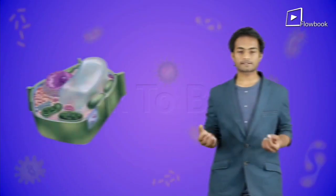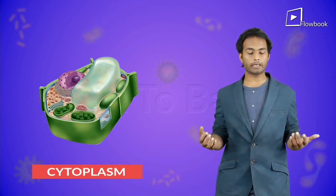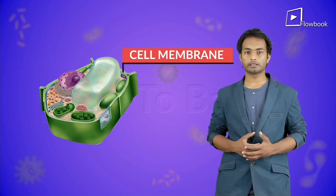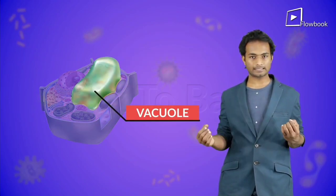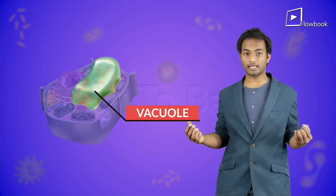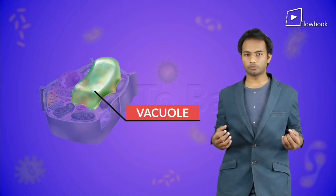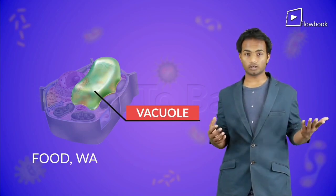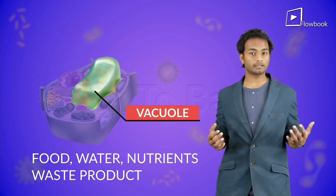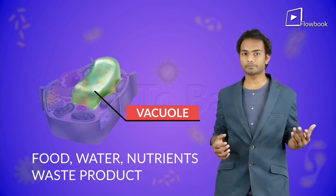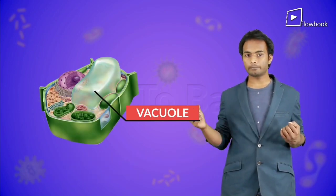We know that cells have cytoplasm, and the cytoplasm is covered by a membrane called the cell membrane. A vacuole is basically nothing but a space inside the cell that doesn't have cytoplasm — it's like a bubble filled with vacuum. Well, not actually vacuum — it can store food, water, nutrients, and sometimes even waste products, so that it doesn't contaminate the rest of the cell.